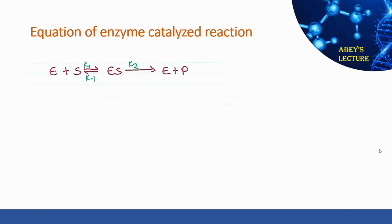The equation for the enzyme-catalyzed reaction is as shown here. When enzyme and substrate react together, they form the enzyme-substrate complex, with rate constant k1 in the forward direction. The enzyme-substrate complex can go in two directions: forward to form product plus free enzyme with rate constant k2 (also known as kcat), or in the reverse reaction to form free enzyme plus substrate with rate constant k-1.